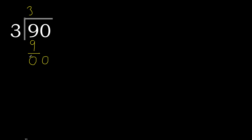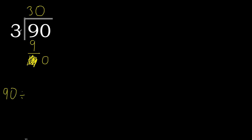Next, eliminate the 0 on this side. The next digit is 0. That is not a number to divide, so 0. Therefore 0, because here we finish in 0. Next, 0. Therefore 90 divided by 3 equals 30.